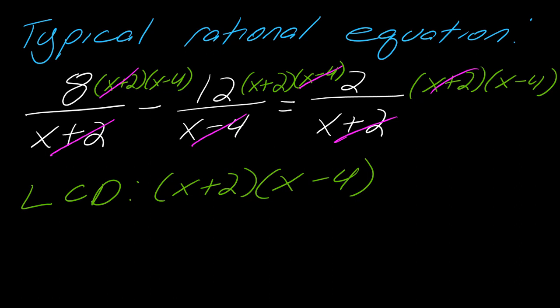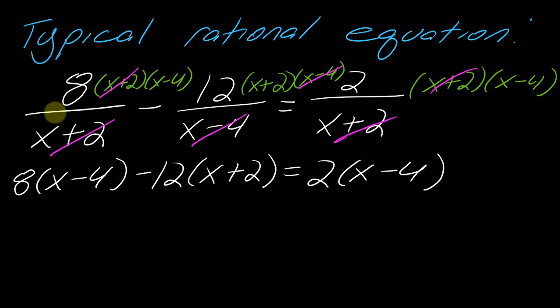Then I'd go through and make my cancellations. I've talked about this in a lot of other videos. At the end, I just take a look at what's left over. Here would be the resulting equations: I'd have 8 times (x-4), and this negative 12 times (x+2), and then 2 times (x-4). So here's what I'm left with, and then I could just go ahead and distribute those things.